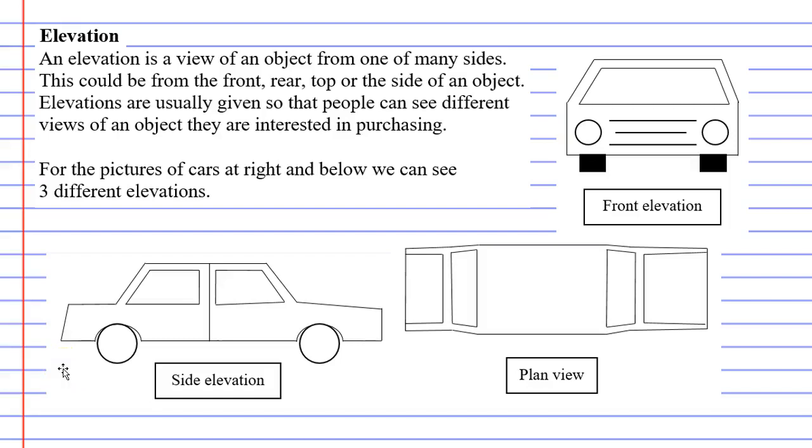Now we're going to talk about elevation, and an elevation is a view of an object from one of many sides. This could be from the front, the rear, the top, or even the side of an object.